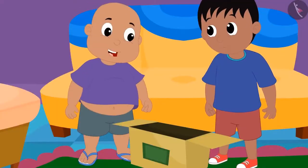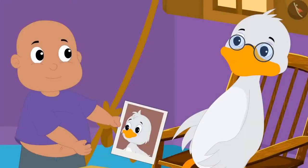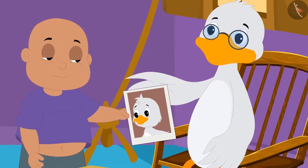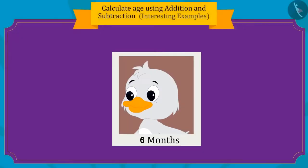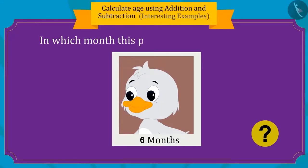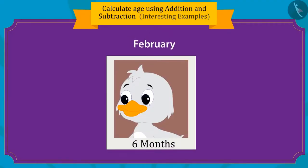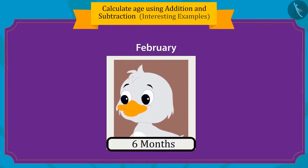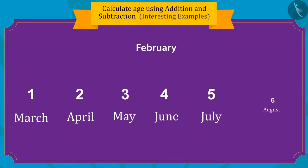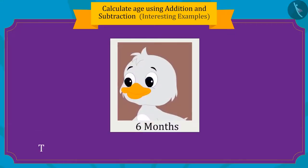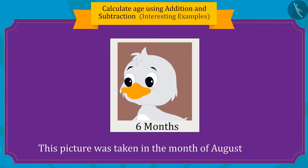Bablu got a picture of Uncle's childhood. It was revealed that Uncle was only 6 months old in this picture. Children, can you tell us in which month this picture was taken in 1962? Uncle was born in February, so which month comes 6 months after February? This picture was taken in the month of August 1962.